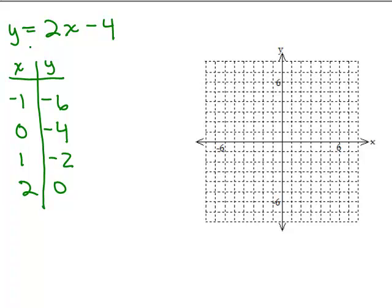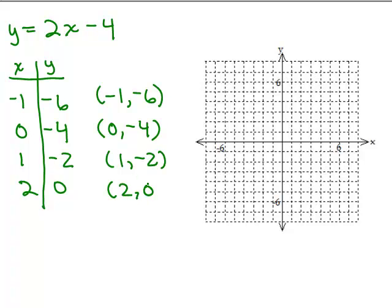Before going on, I want to point out that some people don't have to do that middle step. They simply write x, plug in negative 1, do it in their head, and write what the value of y is. Or, some people simply just write the ordered pairs, put in negative 1, put it in their head, 2 times negative 1 minus 4, and write the ordered pair right next to it.